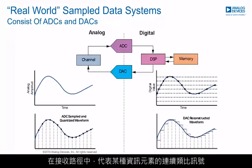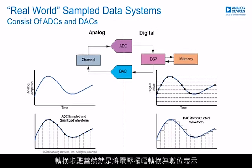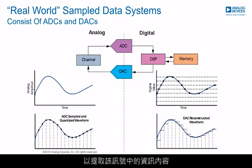In the receive path, a continuous analog signal representing some element of information is captured at a finite point in time. This signal could be represented as a voltage swing over time. The conversion step occurs when that voltage swing is converted to a digital representation — the resulting digital codes can then be processed to extract the information content within that signal.